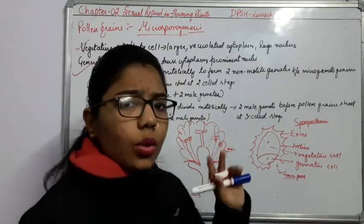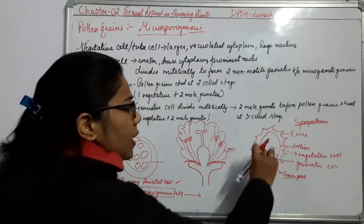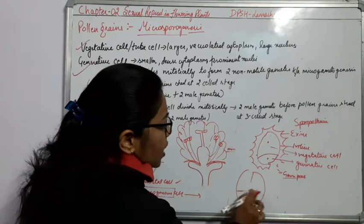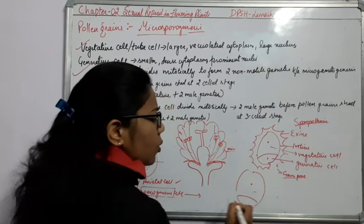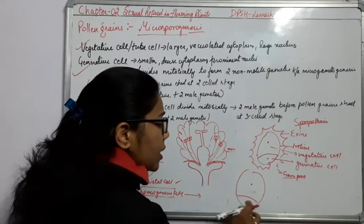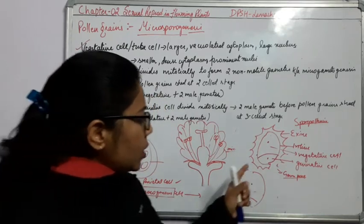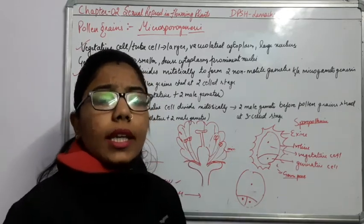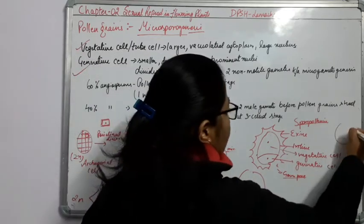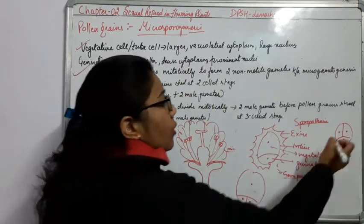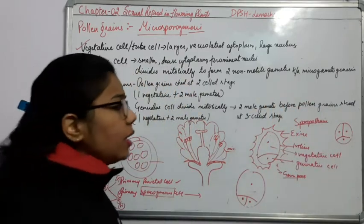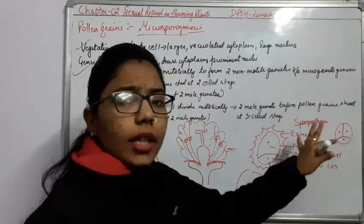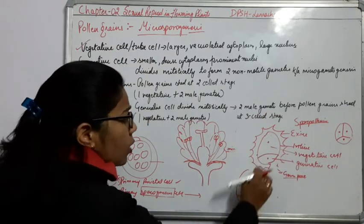Two conditions may be there. Sometimes it forms the three-cell stage: the generative part again divides mitotically and it forms a three-cell stage. Generally, the microspores are in a tetrad structure — four microspores forming, three visible and one from the back. We can say tetrasporangiate structure of the microspores.